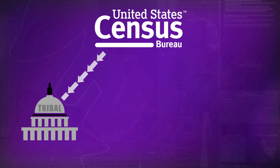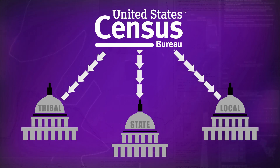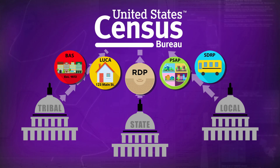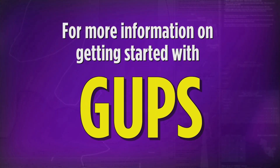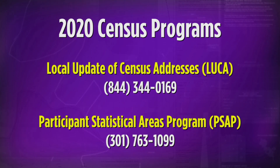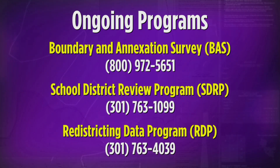Every year, the Census Bureau identifies tribal, state, and local governments for participation in different Census programs for collecting geographic data. If your government has been contacted to respond to a specific program, the Census Bureau encourages participating by using GUPS. Please see the following information about getting started with GUPS. For programs for the 2020 Census: Local Update of Census Addresses, or LUCA, and Participant Statistical Areas Program, or PSAP. And for ongoing programs: Boundary and Annexation Survey, or BAS; School District Review Program, or SDRP; and Redistricting Data Program, or RDP.